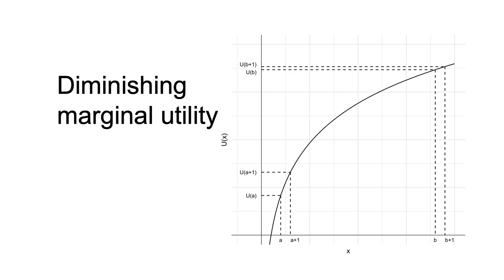This is the idea of diminishing marginal utility. Marginal utility is how much utility you get or lose from an incremental decrease or increase in consumption.